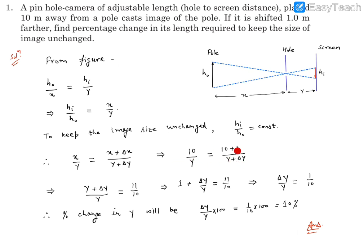Now when we simplify this, that will become (y plus delta y) by y, and this will become 11 by 10. Further it could be written as 1 plus delta y by y, which is equal to 11 by 10. From here you can find out delta y by y as 11 by 10 minus 1, which is basically 1 by 10.